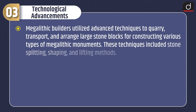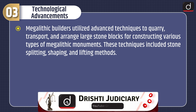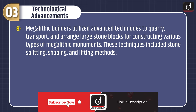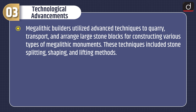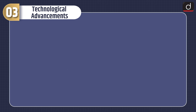Now let's discuss about technological advancements. Megalithic builders utilized advanced techniques to quarry, transport, and arrange large stone blocks for constructing various types of megalithic monuments. These techniques included stone splitting, shaping, and lifting methods. Megalithic cultures continued the tradition of using stone tools, although with some advancements in techniques for shaping and crafting.